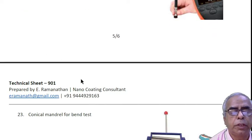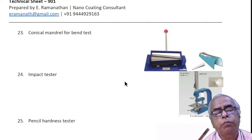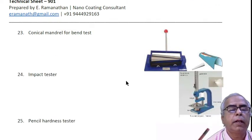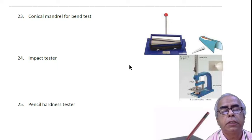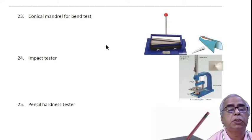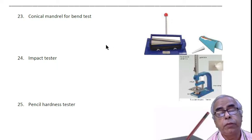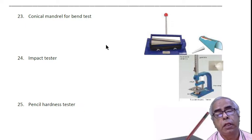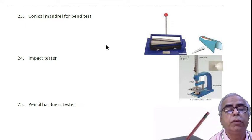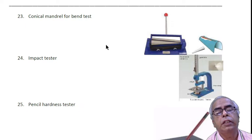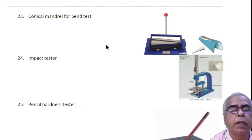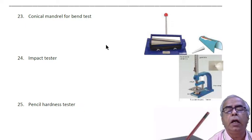You have the conical mandrel for bend test. Hardness and flexibility should go together. Some paint films will be very hard but not flexible, so we want both. This will be useful.